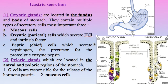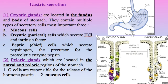Today we will talk about gastric secretion. To understand the composition of gastric secretion we should know the types of glands located in the gastric mucosa. We can imagine the stomach is divided into two parts: the first part composed of the fundus and the body, and the second part composed of the antrum and the pyloric region. Oxyntic glands are located in the first part while the pyloric glands are located in the second part.